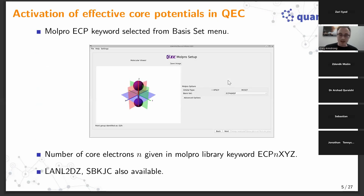How can this capability be activated by a QEC user? Those familiar with QEC will recognize the window where users select the main parameters for the Molpro calculation. One of the main parameters is the basis set, which appears on the right-hand side and is selected from a drop-down menu. Until now, this drop-down menu contained all-electron basis sets, and the plan is that it will simply be extended to account for ECP basis sets.